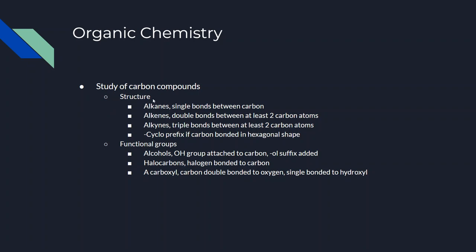Some of the more basic elements of it are the study of the structure and some of the functional groups that can be in these carbon compounds. For example, there are alkanes where there are only single bonds between carbon atoms. For hydrocarbons, compounds made solely out of hydrogen and carbon, there's alkenes where there's double bonds between at least two of the carbon atoms, alkynes where there's triple bonds between at least two of the carbon atoms, and you can add the cyclo prefix if carbon is bonded in a hexagonal shape.